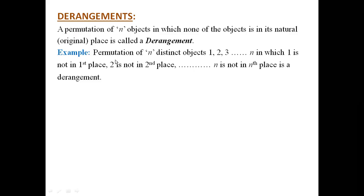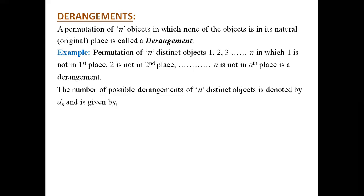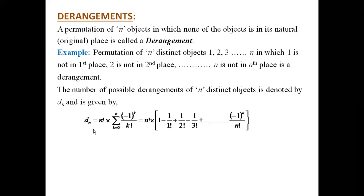Example: permutation of n distinct objects 1, 2, 3, etc., up to n, in which 1 is not in the first place, 2 is not in the second place, and so on — n is not in the nth place. The number of possible derangements of n distinct objects is usually denoted by D(n), and it is given by D(n) equal to n factorial into summation k equal to 0 to n of (−1)^k divided by k factorial. On expansion of the summation, we obtain n factorial into 1 minus 1/1! plus 1/2! minus 1/3!, and so on up to 1/n!, alternating positive and negative.